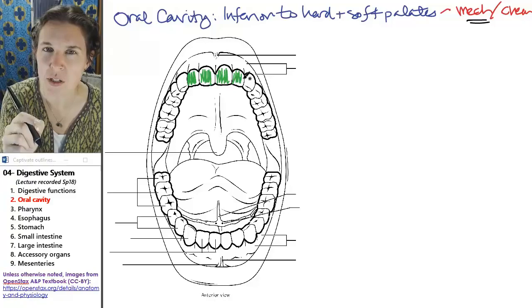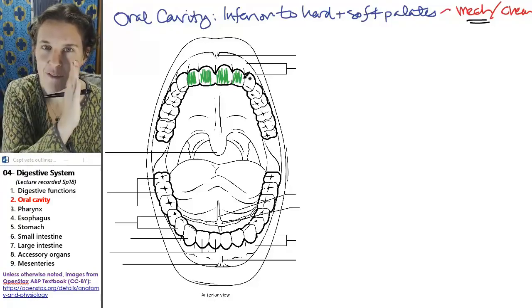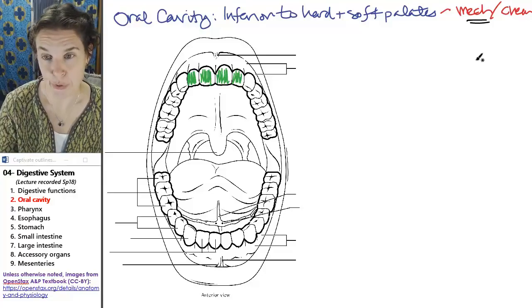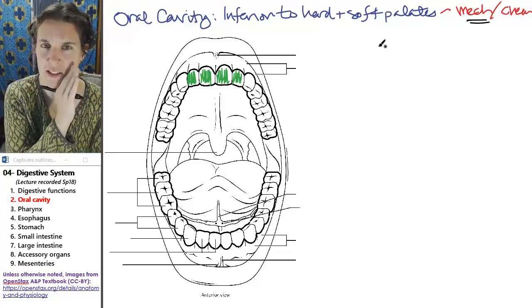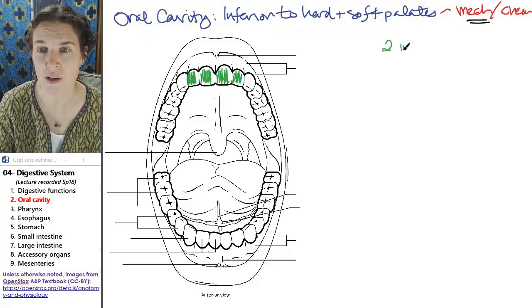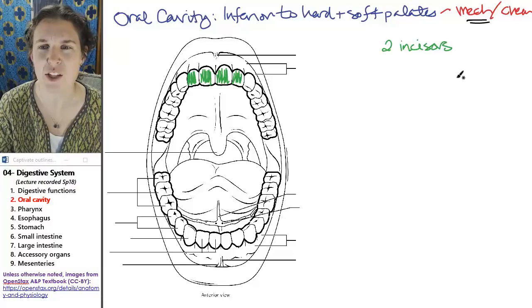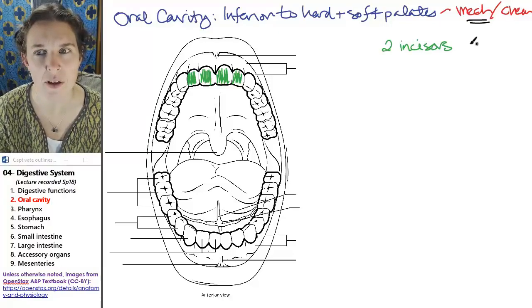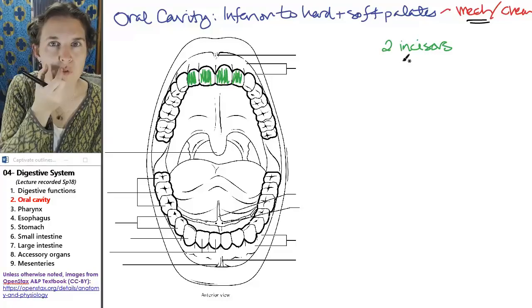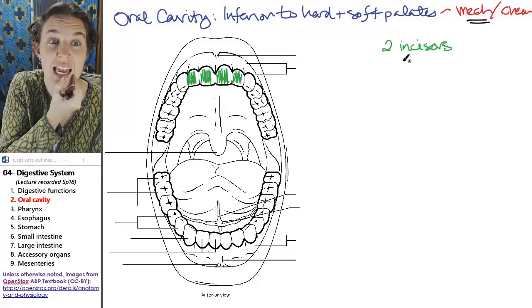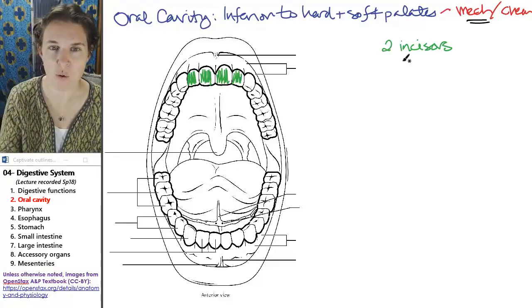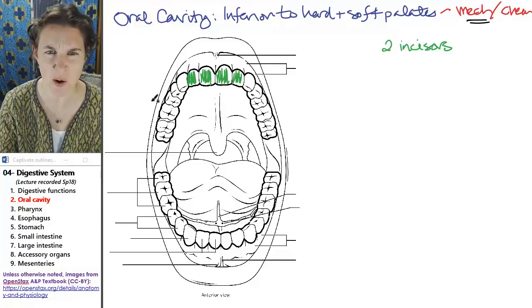So you actually have, and I'm going to give you numbers for half of your face on top or on bottom. So on half your face on the top you have two incisors. How many total incisors do you have? Well, you have two in one quarter of your mouth. So two, four, six, eight. You actually have eight total incisors. But when I say two it's because we're just talking about one quarter.